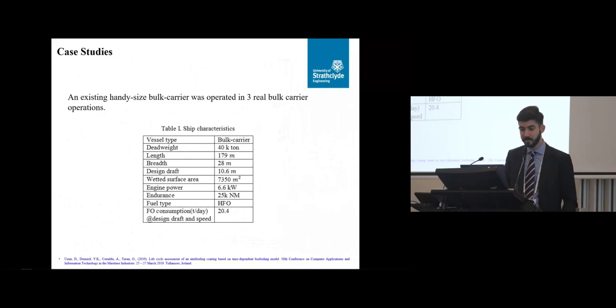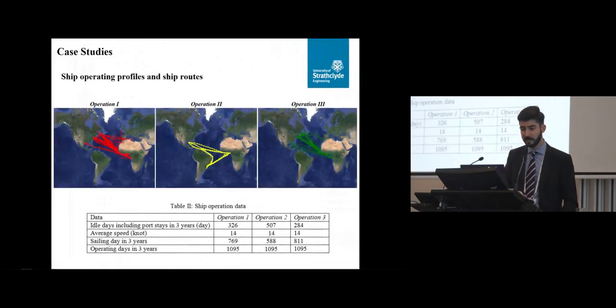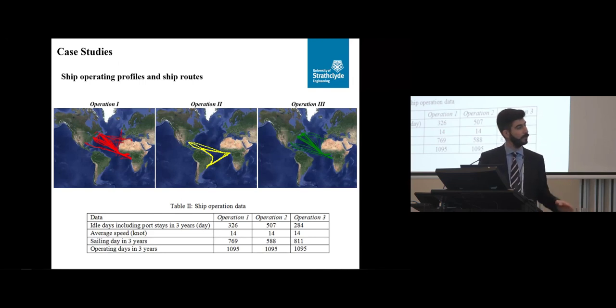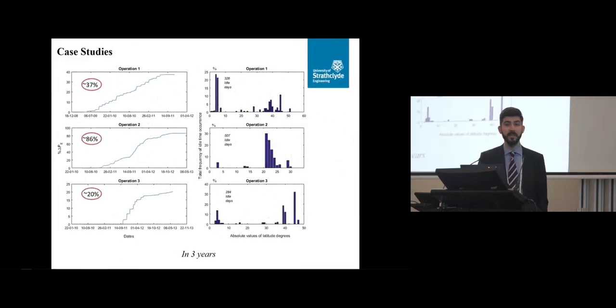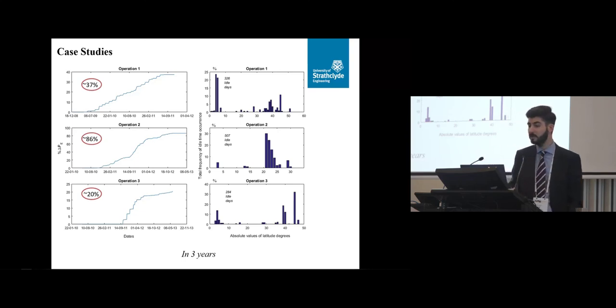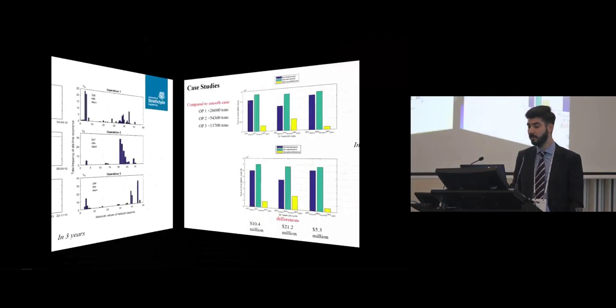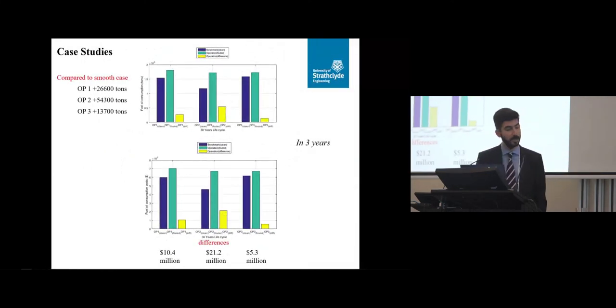Just an example, we took a bulk carrier. We have three different operational conditions, same coating. Obviously different operations have different idle days and the results are significantly different. So you have 37% increase, 86% increase and 20% increase in resistance depending on your operational profile. And obviously we can translate them into some big money or some big greenhouse gas emissions.